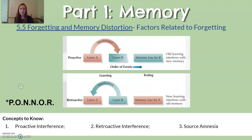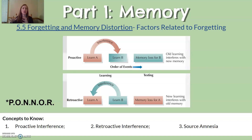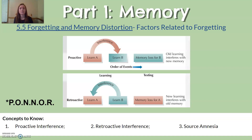Factors related to forgetting include interferences. There are two types: proactive interference and retroactive interference. These occur when two related bits of information in your mind interfere with each other. Proactive interference is when an old memory interferes with your ability to recall a new memory. For example, you go to your locker and keep entering your old combination instead of the new one — that's proactive interference.